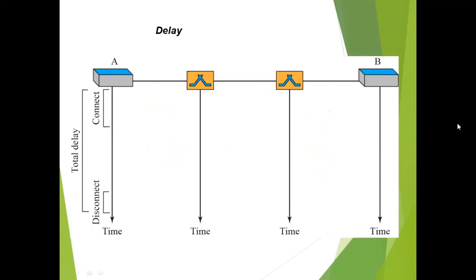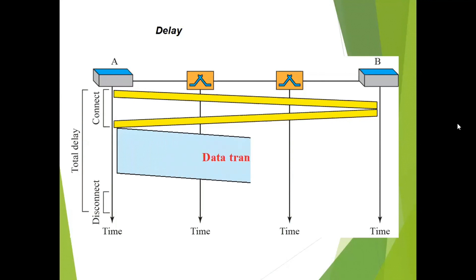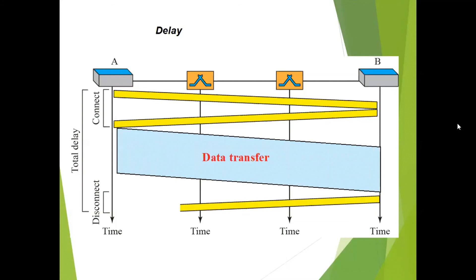In the delay diagram, device A is on the left and device B on the right with two switches in between. First, device A sends a connection establishment request to B, and B replies that it is ready to receive — the connection establishment phase. Then data transfer takes place between A and B via the two switches. After all data is received, an acknowledgement is sent, and then the connection is disconnected. Comparing this to packet switching, the delays are higher in packet switching — that is why circuit switching experiences lower delay.